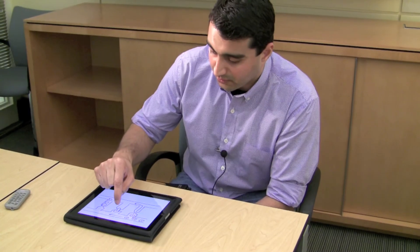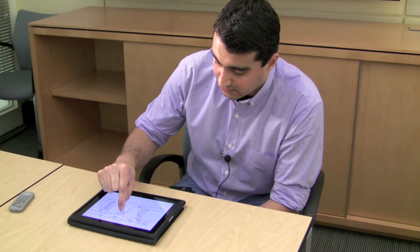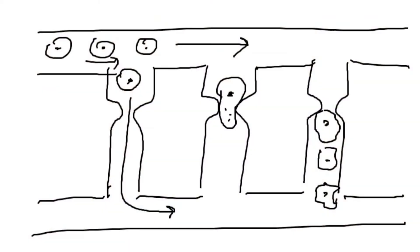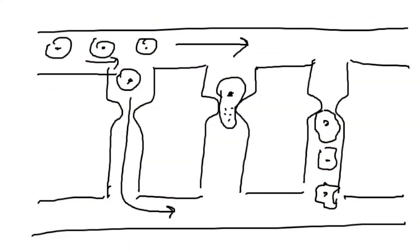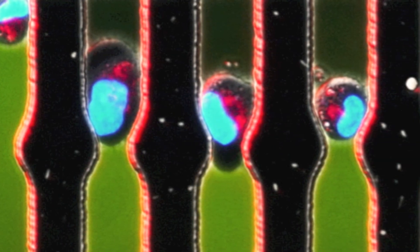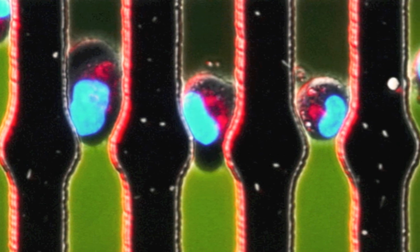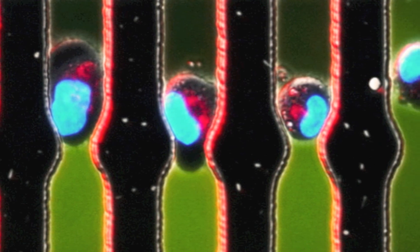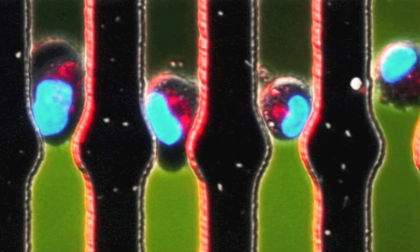What we're looking at are these little tiny dots — the mitochondria in the cells — and we're trying to see how they're spatially localized in the cells as they move. We're hoping that provides us a window into the fundamental mechanics of migration of the cells.